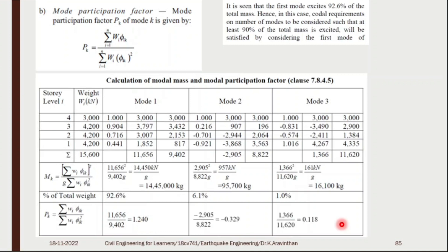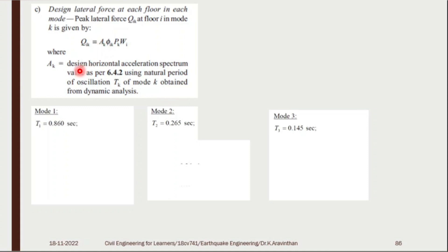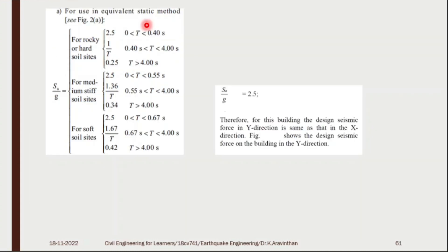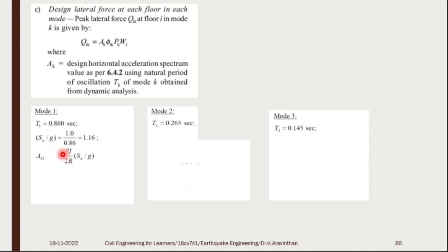Step 3: A_k is the design horizontal acceleration spectrum value as per clause 6.4.2, defined as (Z/2) × (SA/g) × (I/R). Zone 5 gives Z = 0.36. For T_A = 0.8 seconds (in the 0.4–4 second range), SA/g = 2.5 applies. Importance factor for other buildings I = 1. Using these values, A_k for the first mode = 0.0418.